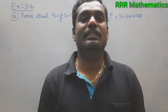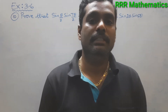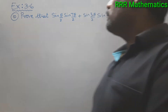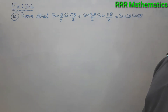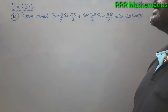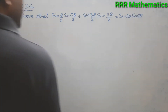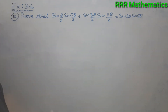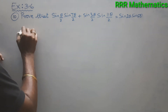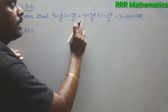Hi my dear students, today we will discuss Chapter 3 Trigonometry, Exercise 3.6, Question Number 10. Prove that sin(θ/2)·sin(7θ/2) + sin(3θ/2)·sin(11θ/2) equals sin(2θ)·sin(5θ). On my left hand side I have a product plus again a product.